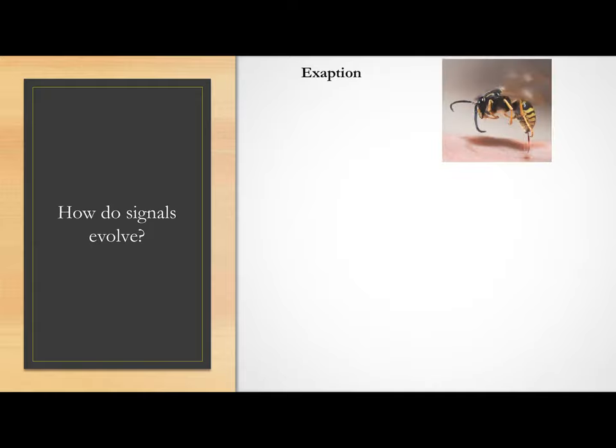One example is a wasp's stinger. Ancestors to wasps didn't have stingers, but they did have really similar organs which they used to lay eggs, called ovipositors. This black wasp isn't necessarily an ancestor to the yellow jacket, but it has a long ovipositor coming out of its back that looks like the wasp's ancestors might have. That egg layer evolved into a stinger.